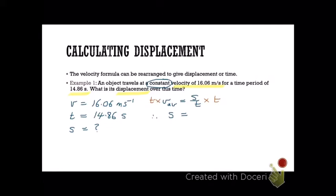And now we need to rearrange that to give displacement. To do that, you multiply both sides of the equation by T. The T's cancel out on the right, and you're left with S equals Vav times T, or T times Vav, whichever you prefer. Substitute the data, calculate it, and highlight your answer.